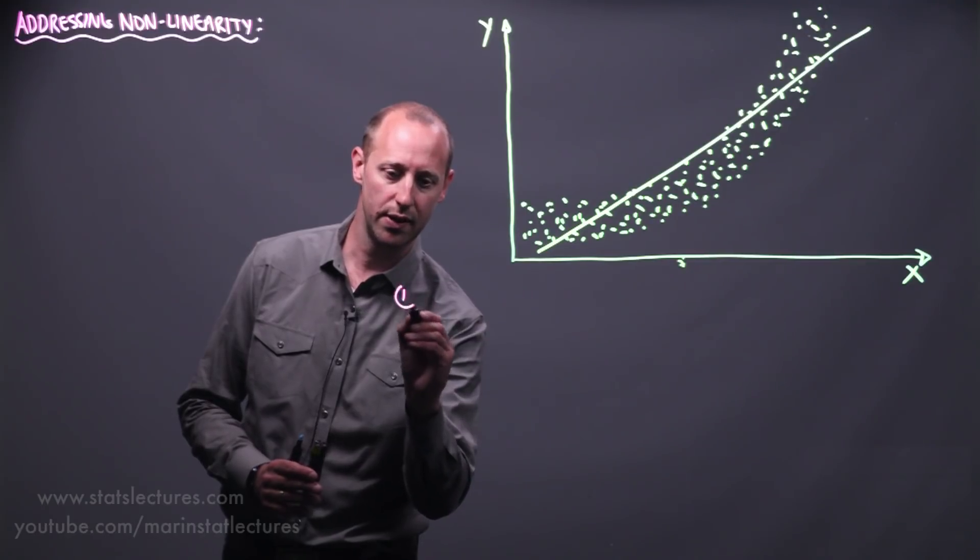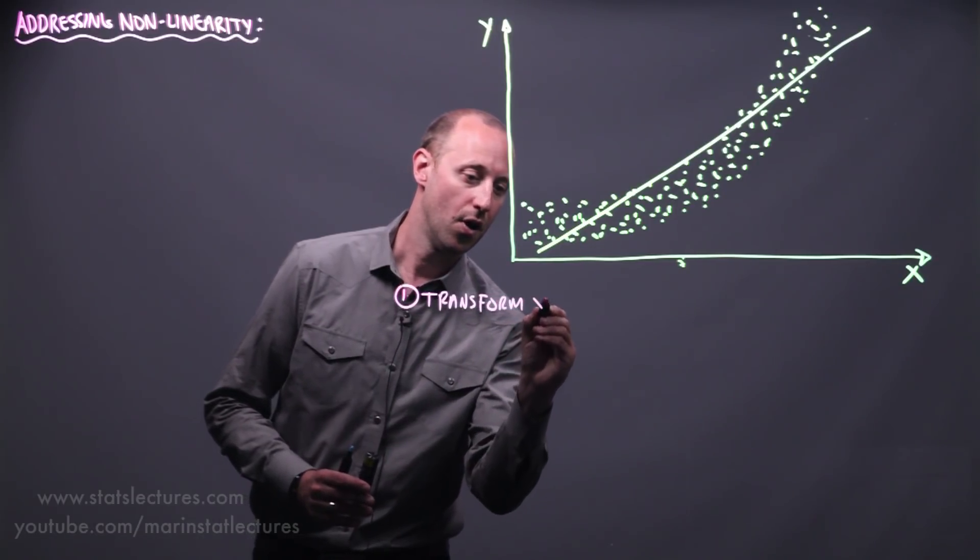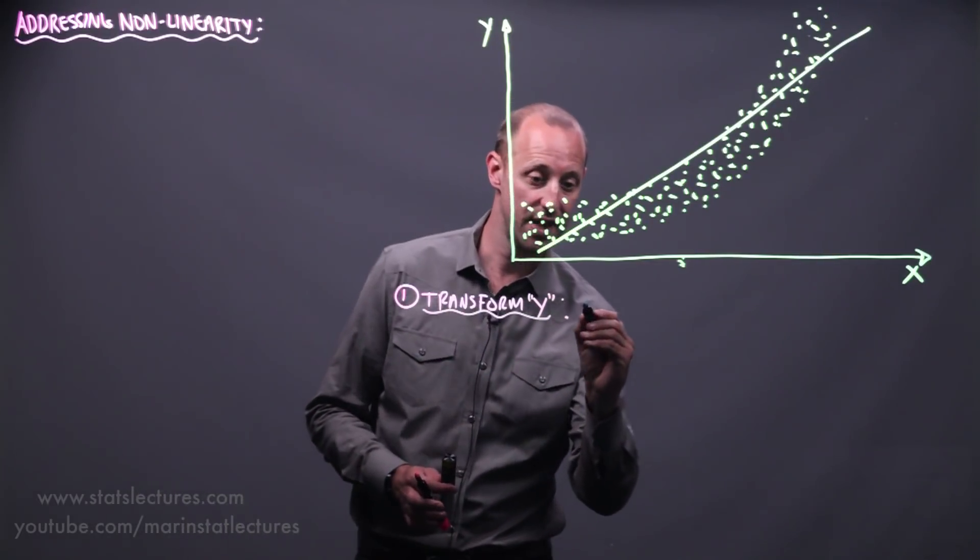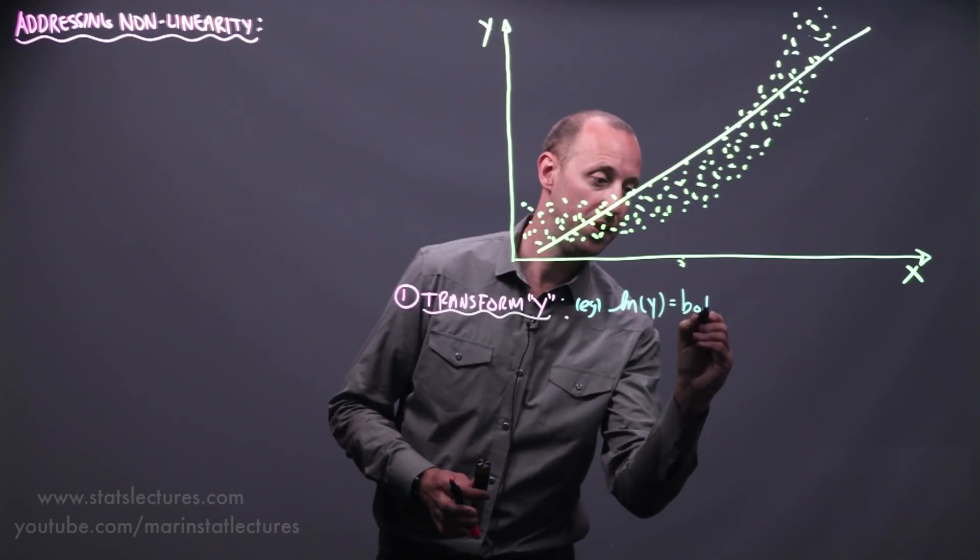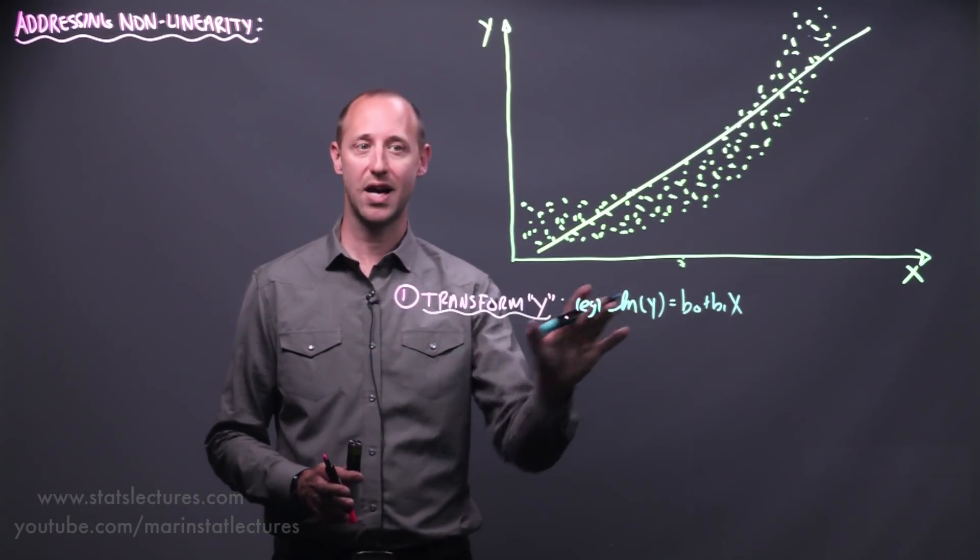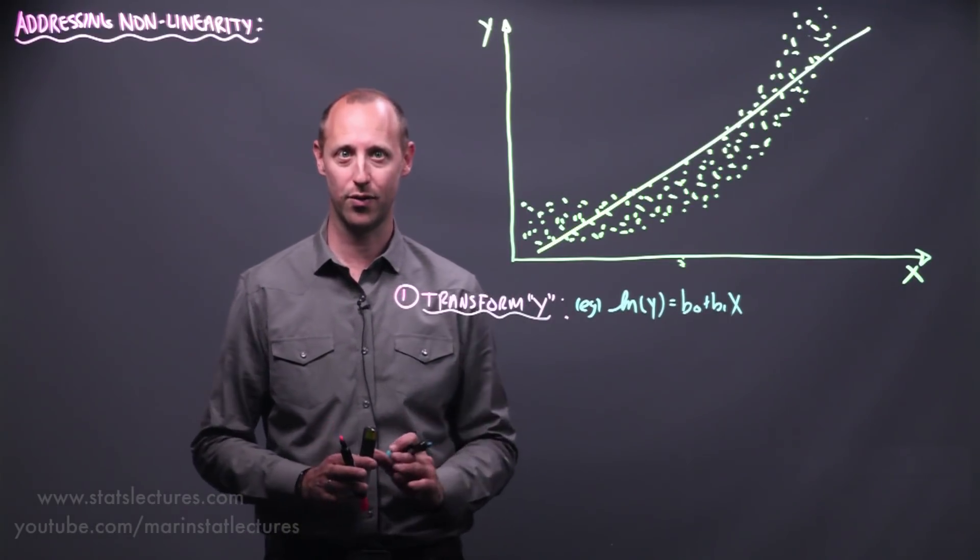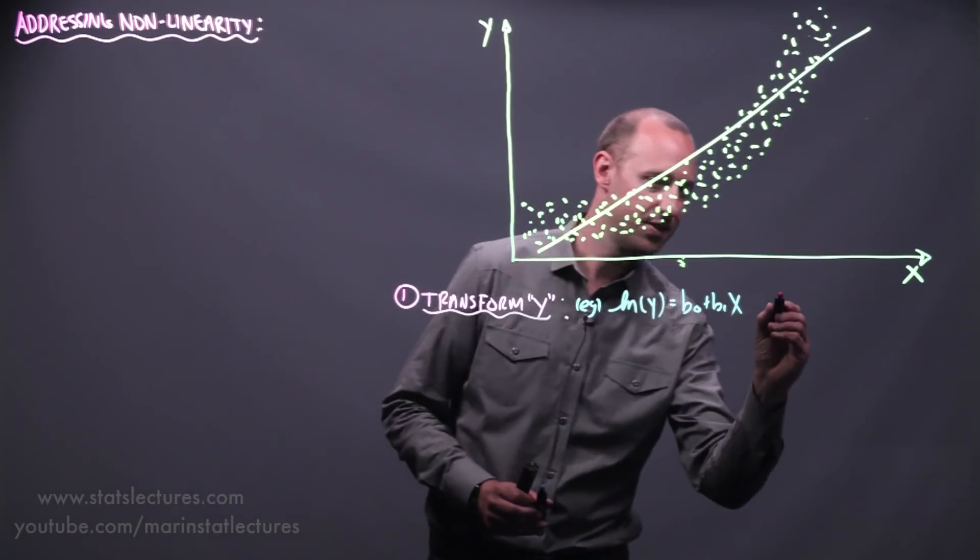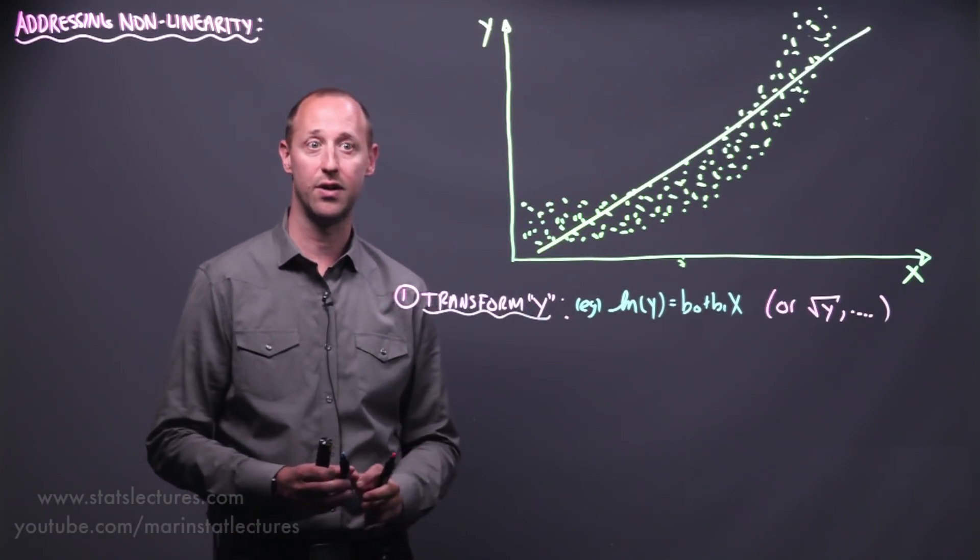So the first thing that we can try doing is we can try to transform our y variable. And by that what I mean is rather than working with y, we can try working with say, for example, the log of y equals b0 plus b1x. An important note here in statistics when we tend to say log, we mean the natural logarithm or ln. It's the most commonly used one so a statistician tends to say log when they're referring to ln or the natural logarithm. So we can think of rather than modeling y, trying to model the log of y as a linear function of x or other transformations like square root of y or so on.